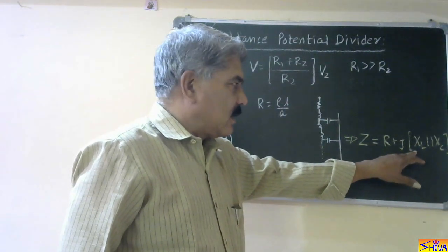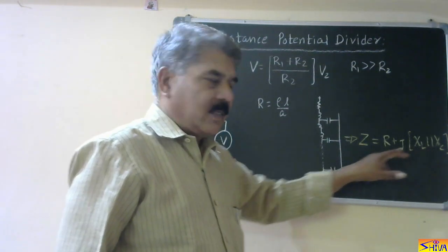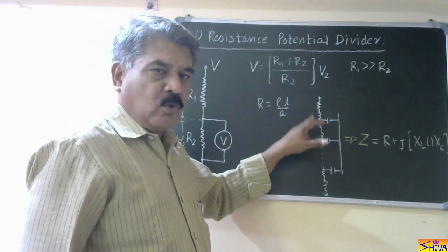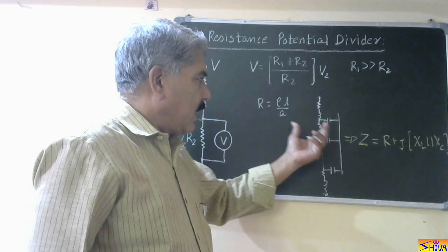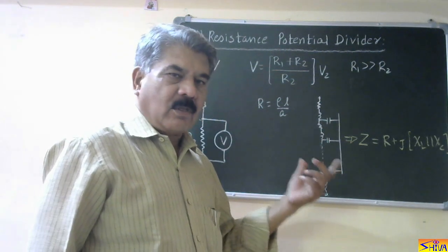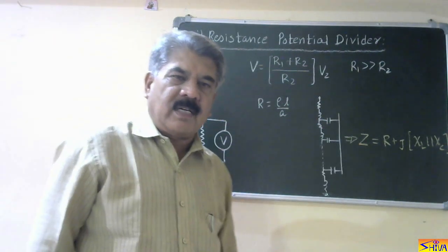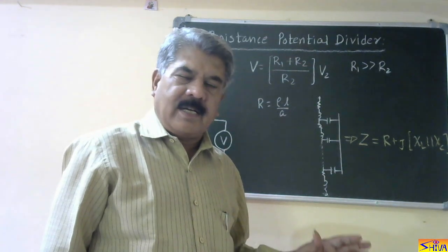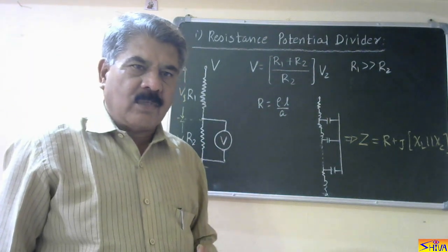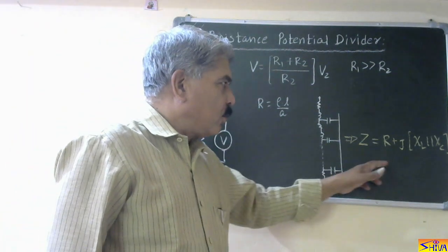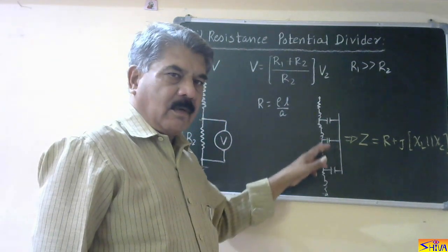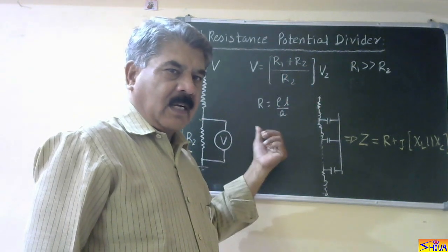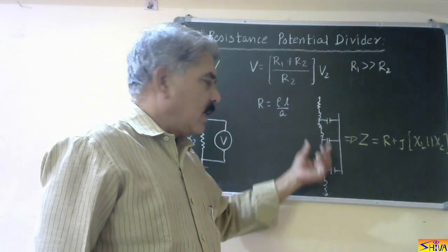XL represents stray inductance and XC represents stray capacitance. When using this resistance potential divider for DC voltage measurement, XL = 2πfL = 0 since frequency f = 0, and XC = 1/(2πfC) = infinity. So the inductance is effectively short-circuited and capacitance is open, meaning there is no effect of stray inductance or capacitance. However, when used for high AC voltage measurement, due to stray inductance and capacitance, the measured voltage V2 will not be in phase with the current, causing phase displacement and measurement error.